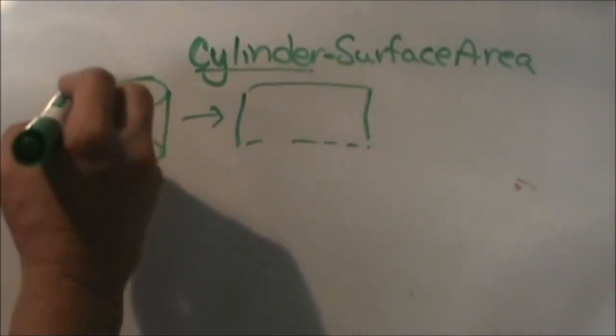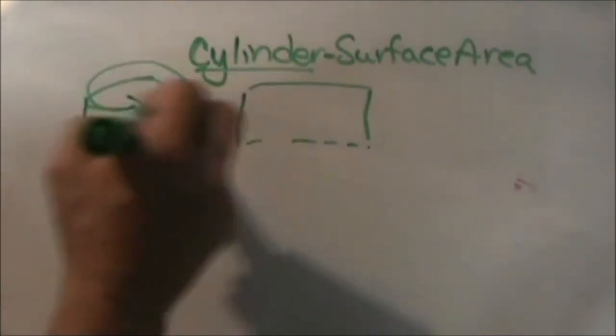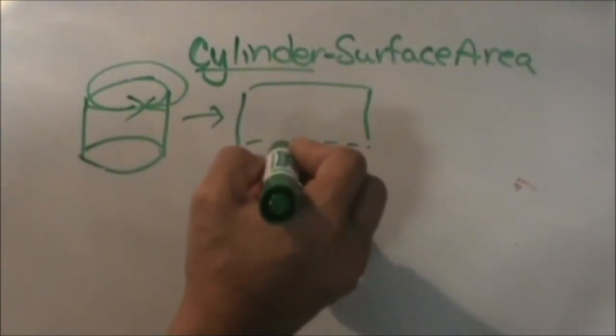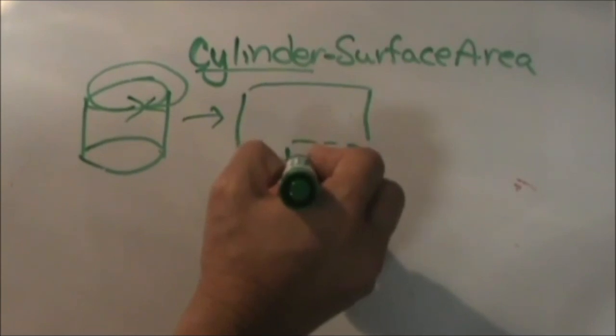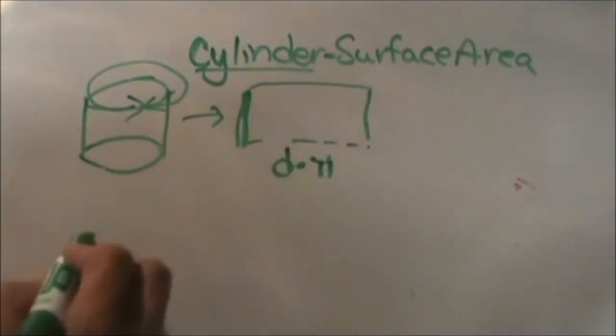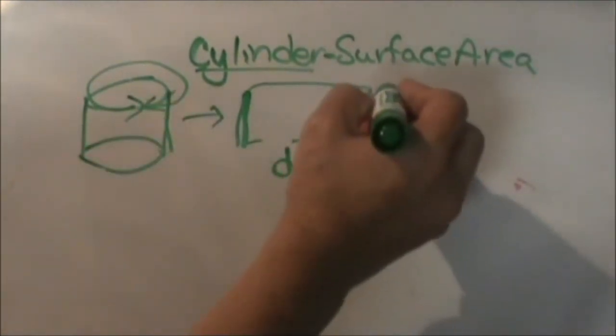But the length of that label is the distance around the top of the can, so it's actually the circumference, which is the formula d times pi, where d is your diameter. And then of course this side is your height of your can, so that's your height.